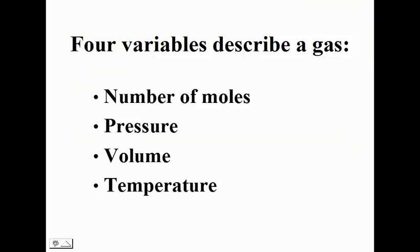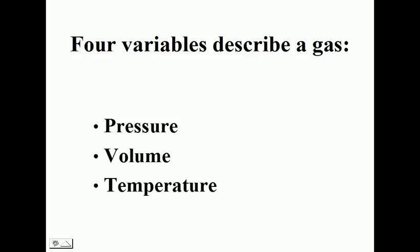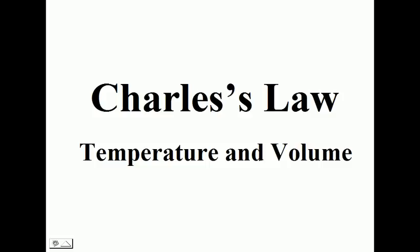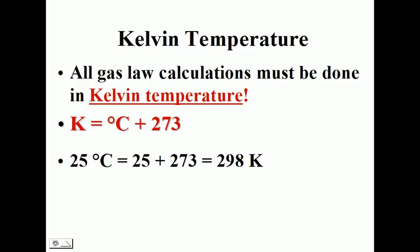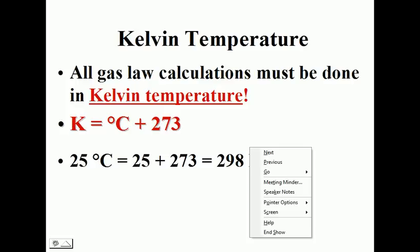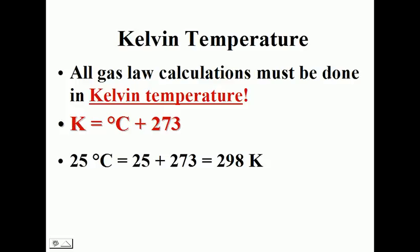Let's go back to our four variables that describe a gas. This time, we're still going to keep the number of moles constant, but we're going to vary not only the volume — keeping the pressure constant — but now vary the temperature with the volume. This is known as Charles' Law, the relationship between temperature and volume. Anytime you do any gas law problems, your temperatures must be converted to Kelvin by adding 273. A common temperature you will use is 298 K, which is room temperature.